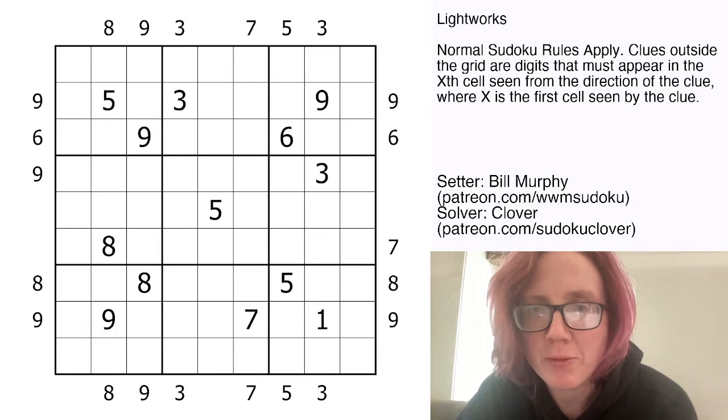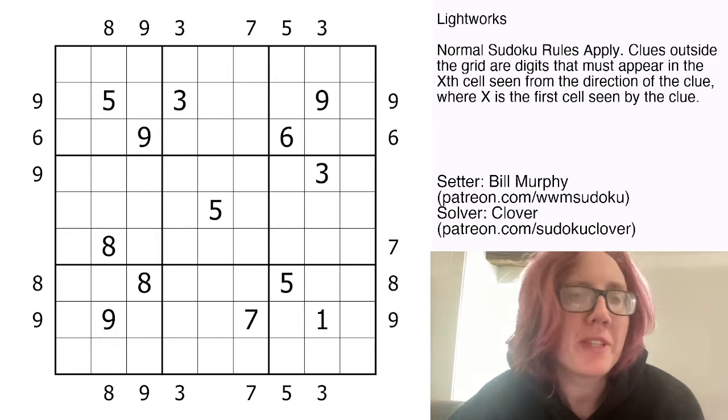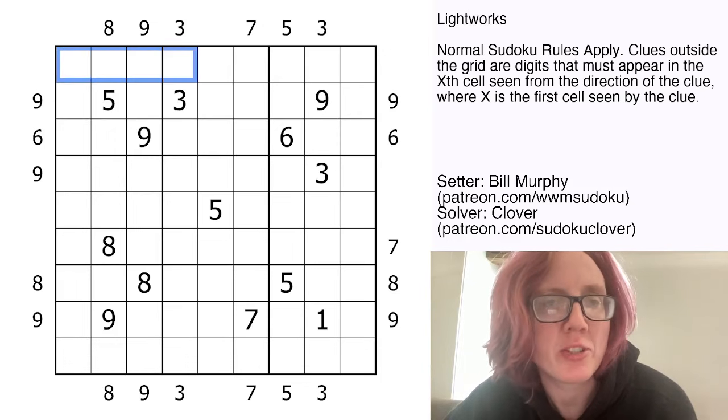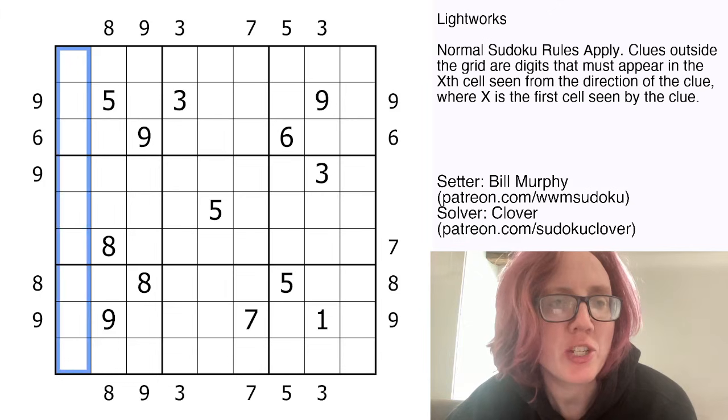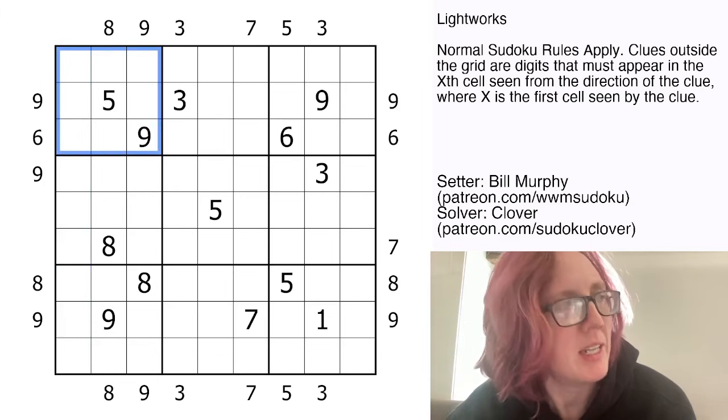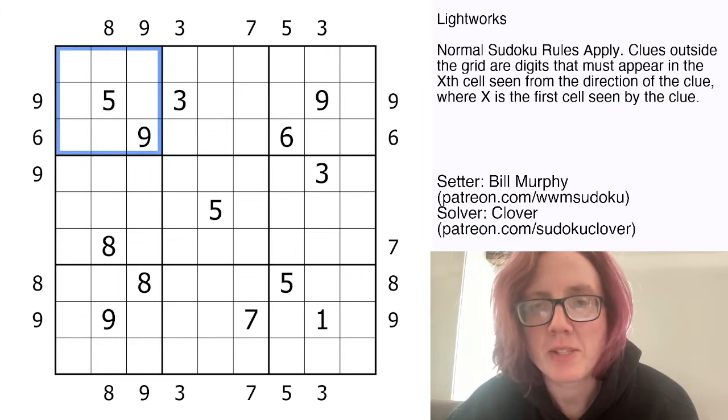It's a numbered room sudoku. What that means is that we have normal sudoku rules, so we're placing the digits 1 through 9, once each in each row, each column, and each outlined 3x3 region. And in addition to that, we have numbered rooms clues.